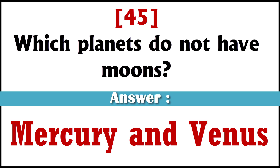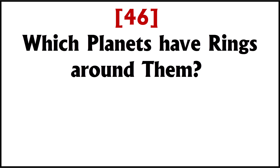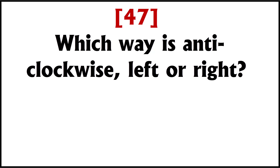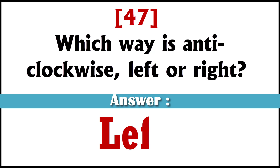Which planets have rings around them? Saturn, Jupiter, Uranus and Neptune — four planets. Which way is anti-clockwise, left or right? Left.